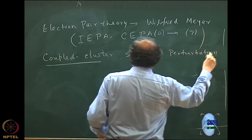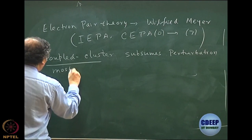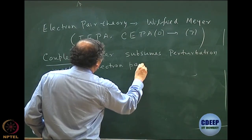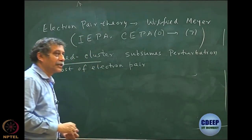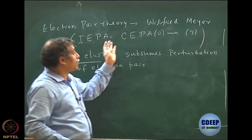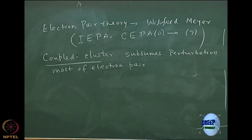Though perturbation is independently exist and most of the electron pair, this is a very debatable point of course, because there are a lot of people in Europe, particularly in Germany, who actually work on electron pair approximation. As you can see from the name, Wilfred Meyer was from Germany and many of the German scientists are very attached to electron pair theory.